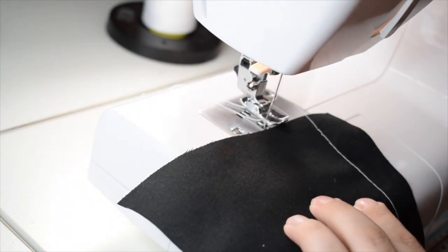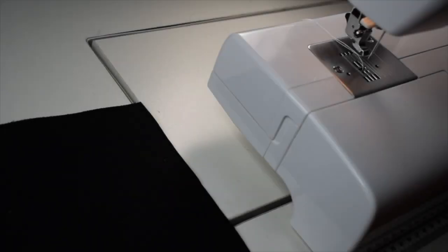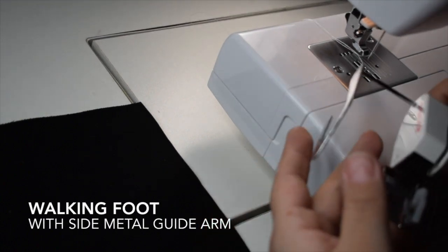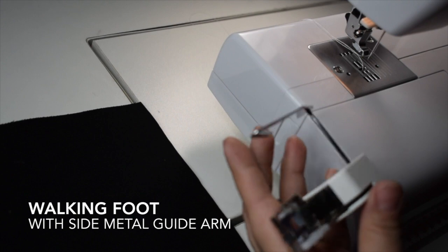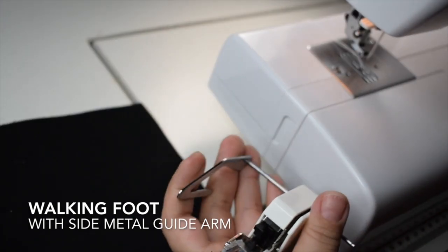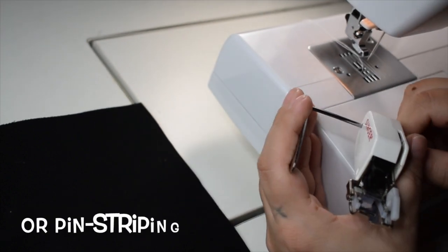This brings us to the second foot. This is a walking foot and I use this with a side metal guide arm. This is really good for quilting, but if you're doing any kind of stitching straight lines through parts of your costume, this little metal bar slides to the back of it.